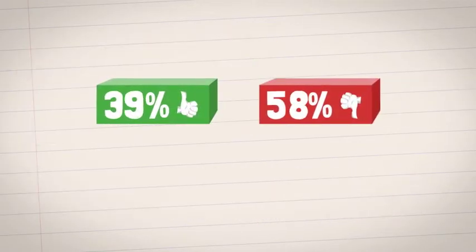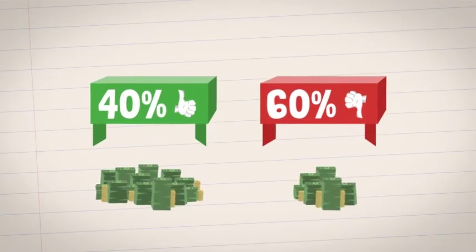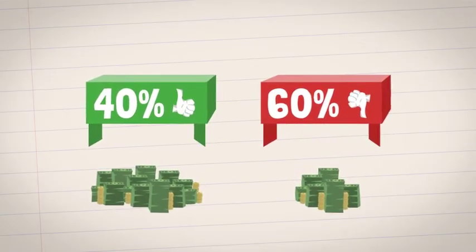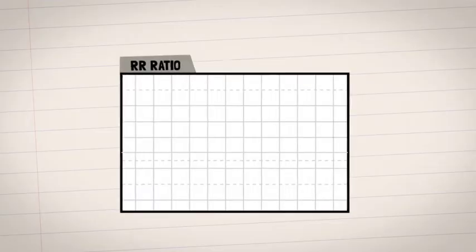So if you only get it right 40% of the time, you want to make sure those trades make way more than all the losing trades. The RR is calculated using three numbers.